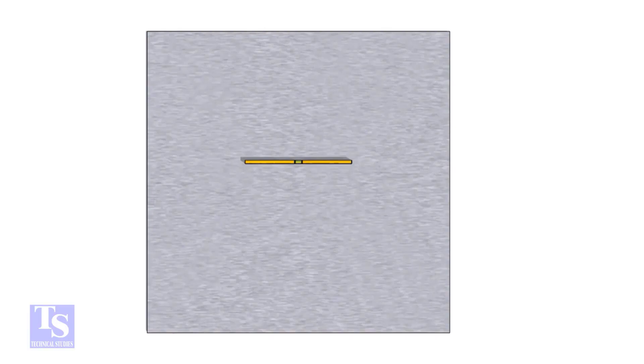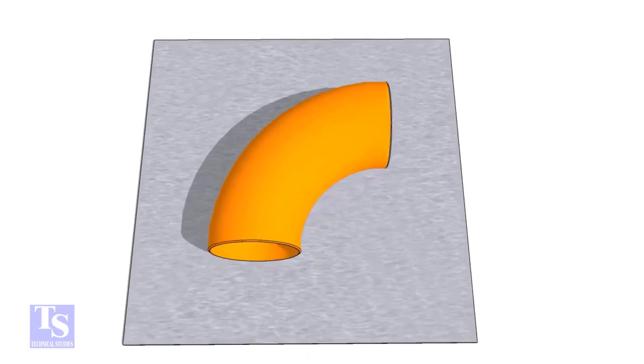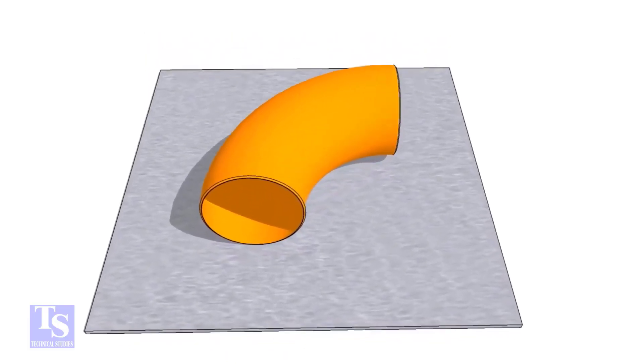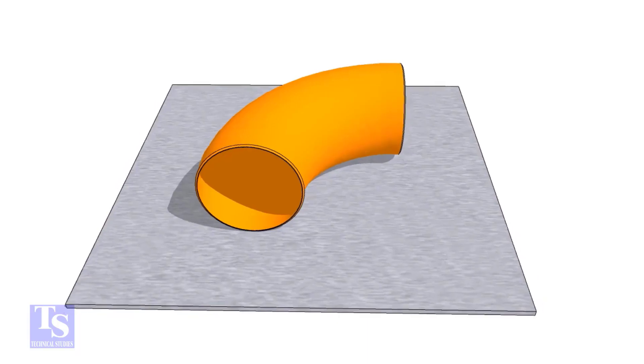First of all, choose a leveled plate and put the elbow on it. Check the outer diameter of the elbow.